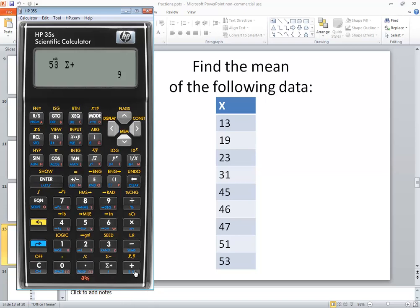Now I've got those numbers entered in there, and you see above the plus down here, it says X bar, comma, Y bar. So if I do my yellow key, and then the plus, it'll bring that up.